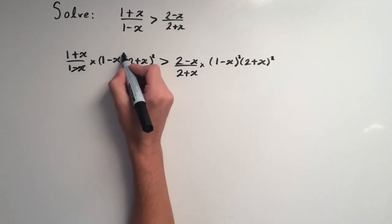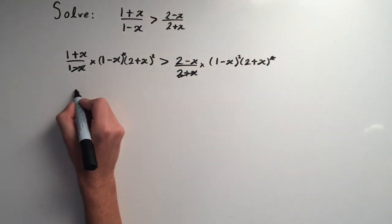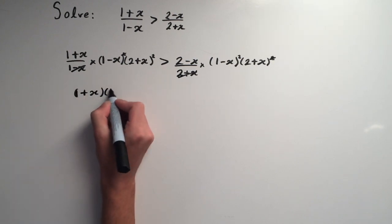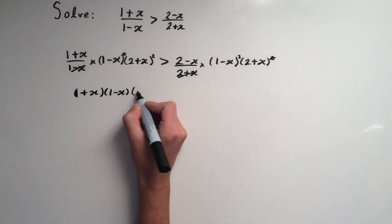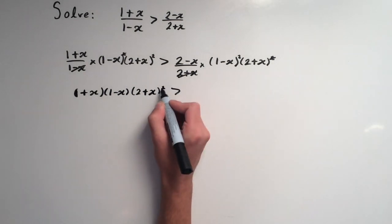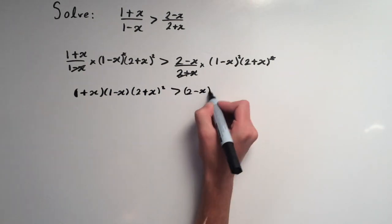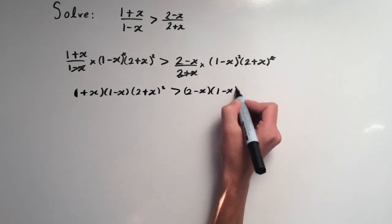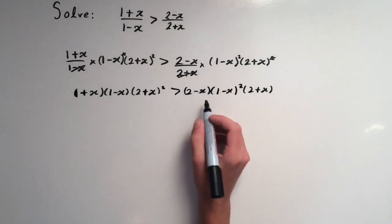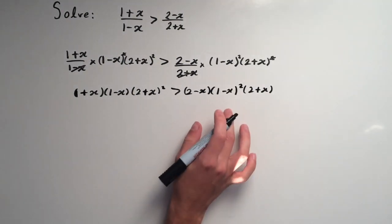Some terms are going to cancel out, so we're left with (1+x)(1-x)(2+x)² greater than (2-x)(1-x)²(2+x). Now we're going to subtract one side from the other, subtracting the right side from both sides.